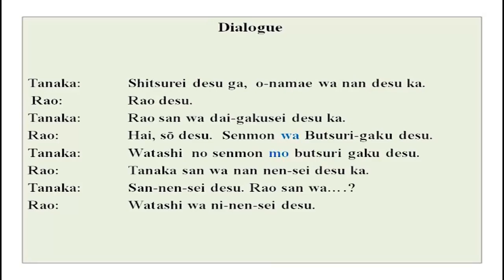This is what you actually heard. This is a conversation between Tanaka-san and Rao-san. They are just talking and have already met, probably, because the usual first-time meeting conversation — hajimemashite dozo yoroshiku — is not there. Shitsure desu ga, onamae wa nandesuka? Rao desu. Rao-san wa daigakusei desu ka? Hai, so desu. Senmon wa butsurigaku desu. Watashi no senmon mo butsurigaku desu. Tanaka-san wa nannensei desu ka? San-nensei desu. Rao-san wa? Watashi wa ni-nensei desu.